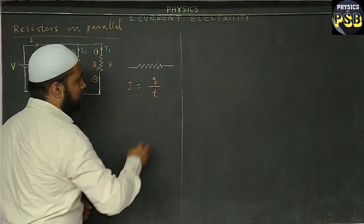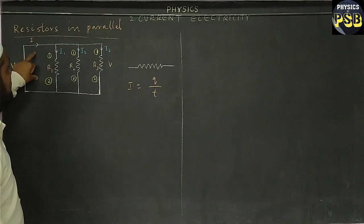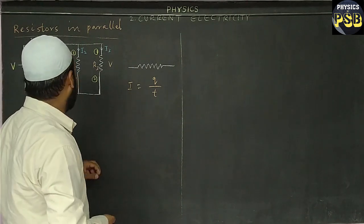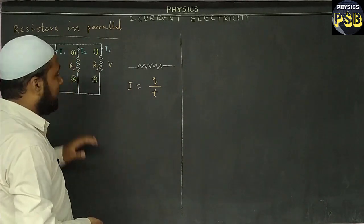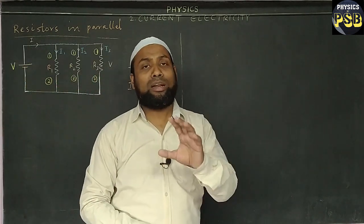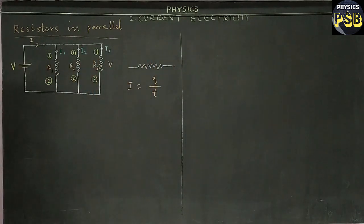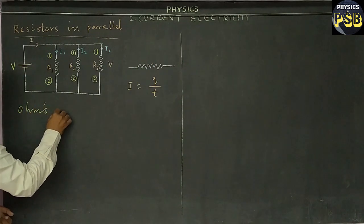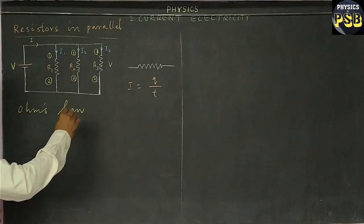It is due to conservation of charges. We know current is nothing but rate of flow of charges. Here the charges get split while flowing through R1, R2, and R3. That is why the current through these resistors do not remain the same.